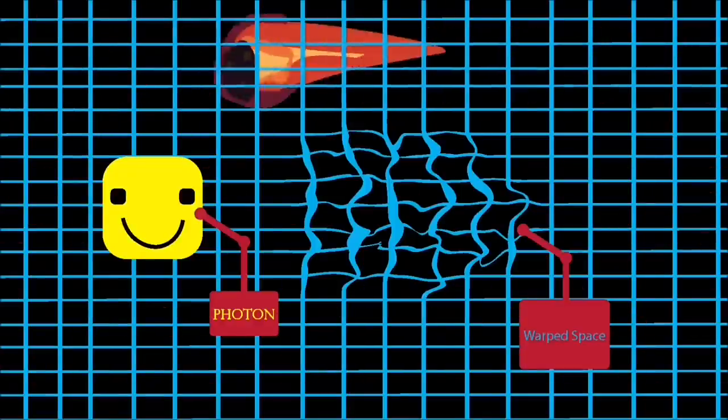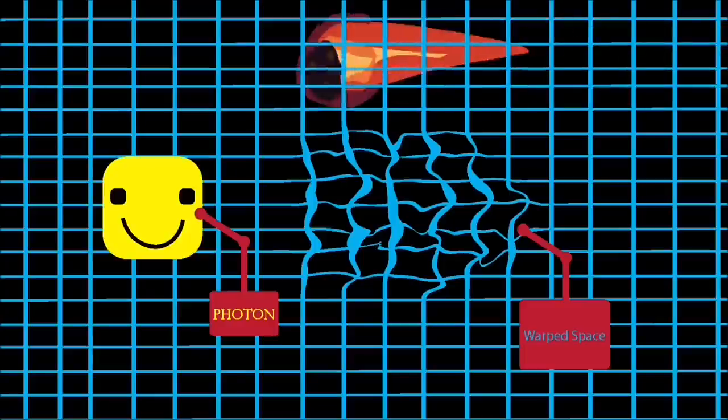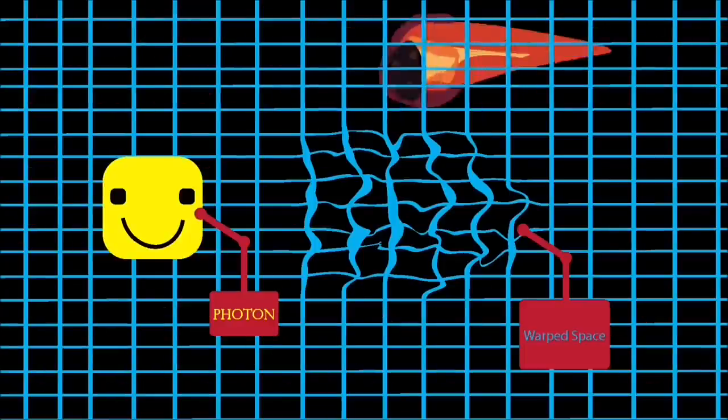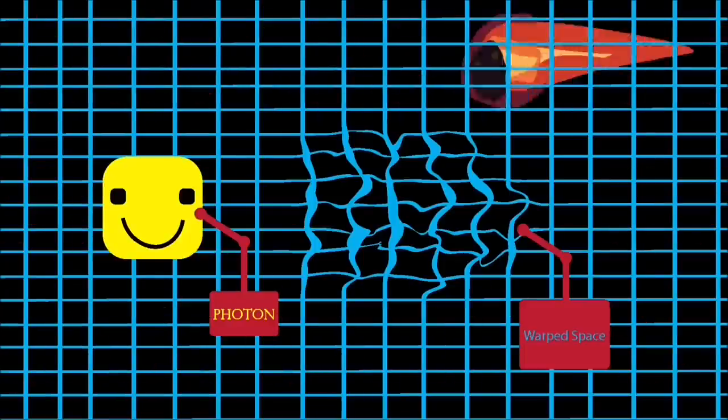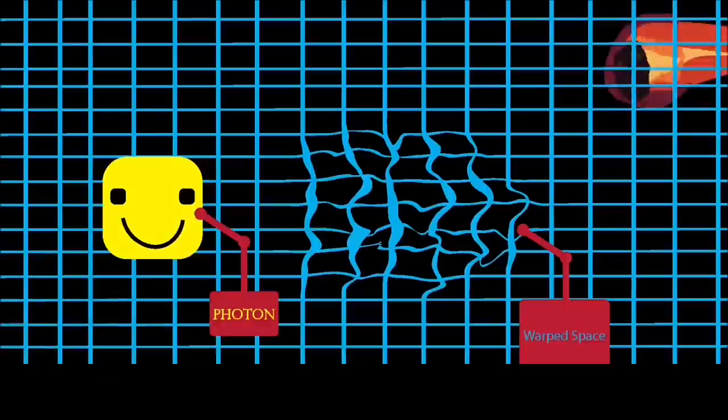Put simply, Einstein's theory of relativity doesn't forbid the idea of space itself moving faster than the speed of light, which is what the concept of a warp drive is built upon. If a warp drive did exist in real life...